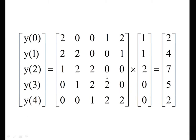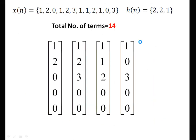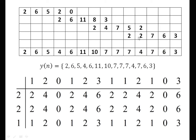We now arrange the outputs of the circular convolutions. Output of first: 2, 6, 5, 2, 0. There should be overlapping of two locations because 2 zeros were appended. Output of second: 2, 6, 11, 8, 3. Next: 2, 4, 7, 5, 2. And 2, 3. The final overlap add result by summing: 2, 6, 5, then 2 plus 2 equals 4, then 0 plus 6 equals 6, then 11, then 8 plus 2 equals 10, then 3 plus 4 equals 7, 7, then 5 plus 2 equals 7, then 2 plus 2 equals 4, 7, 6, 3. This is the output y of n by using the overlap add method. We cross-check using the matrix method and confirm both answers are the same.